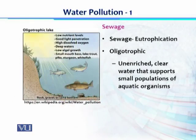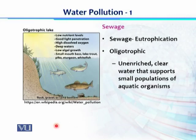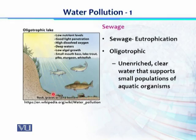Sewage eutrophication can be understood from this image. It is called oligotrophic eutrophication when there is a lesser amount of nutrients released in the sewage. In oligotrophic, unenriched conditions, the water is comparatively clear and supports a small population of aquatic organisms. Biological oxygen demand is low, dissolved oxygen is higher, and algae is also under control.